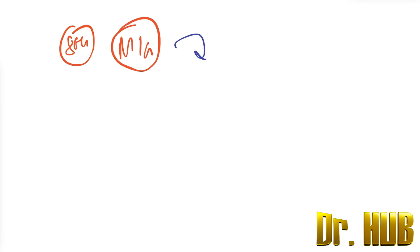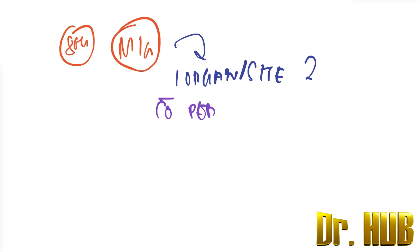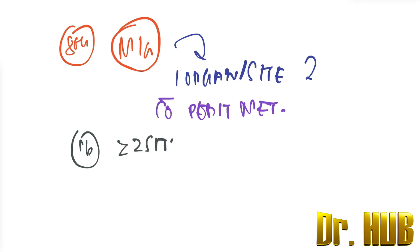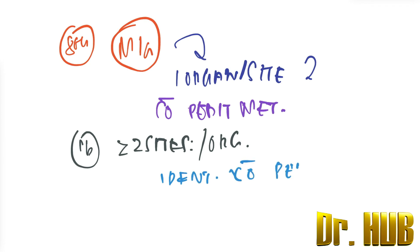M1A means metastasis is confined to one organ or site without peritoneal metastasis. M1B means metastasis to greater than two sites or organs, also identified without peritoneal metastasis.